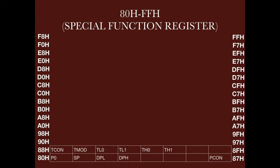The PCON register is used for different power reduction modes available in 8051. From 88H onwards, we have timer-related registers: TCON for timer control, TMOD for timer modes for timers 0 and 1, TL0 and TL1 as the lower bytes, and TH0 and TH1 as the higher bytes for timers 0 and 1 respectively. Both timers are 16-bit timers, so we need 2 bytes each. Then we have the P1 register at 90H, which stores P1's contents.